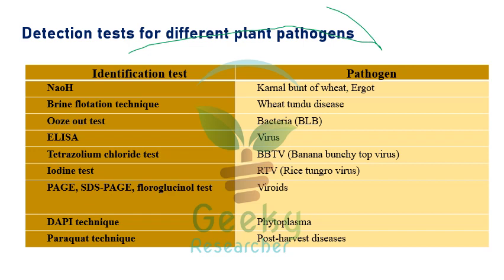Detection techniques for different pathogens: Sodium hydroxide test is recommended for kernel bunt of wheat and ergot. Brain flotation technique is recommended for wheat tundu disease. Woos out test is recommended for bacteria, especially rice bacterial leaf blight, and almost all kinds of bacteria.